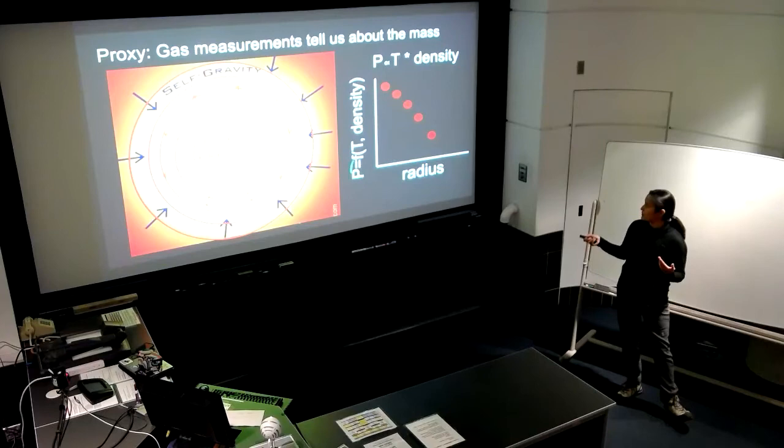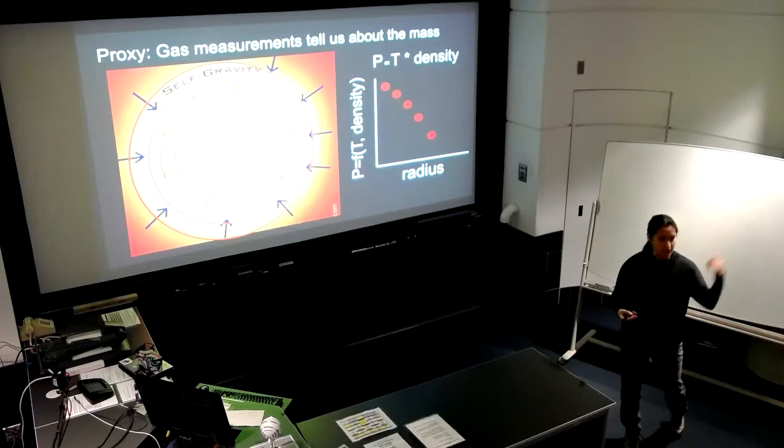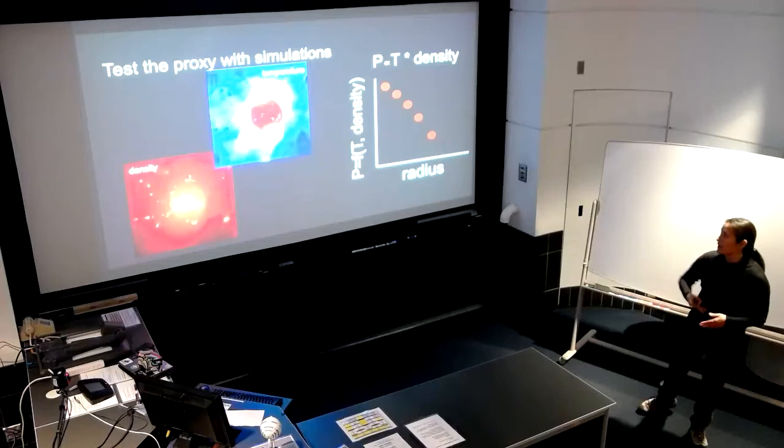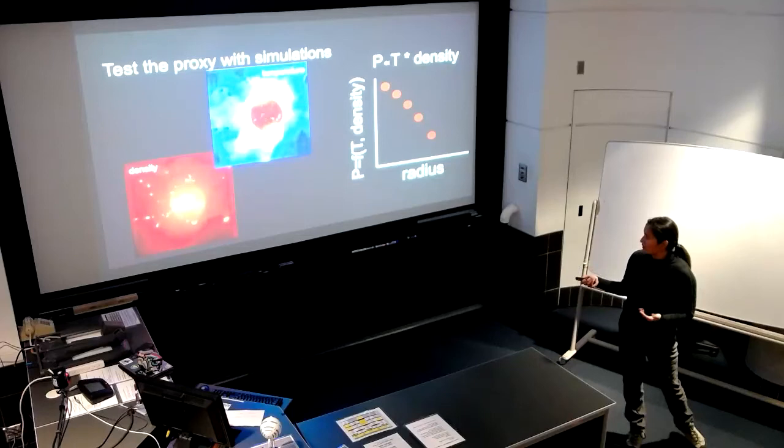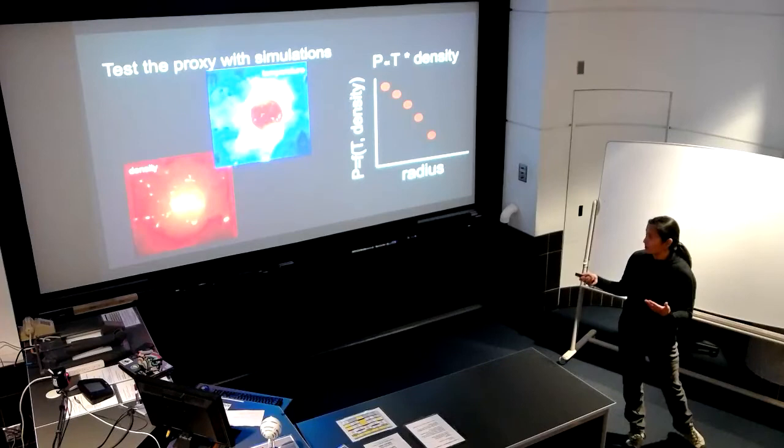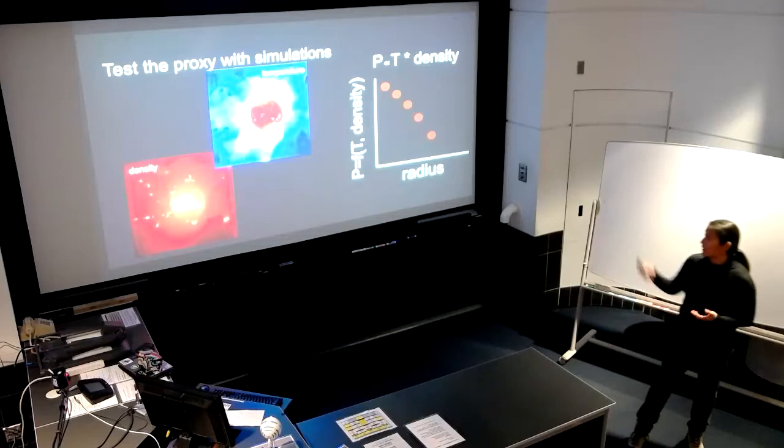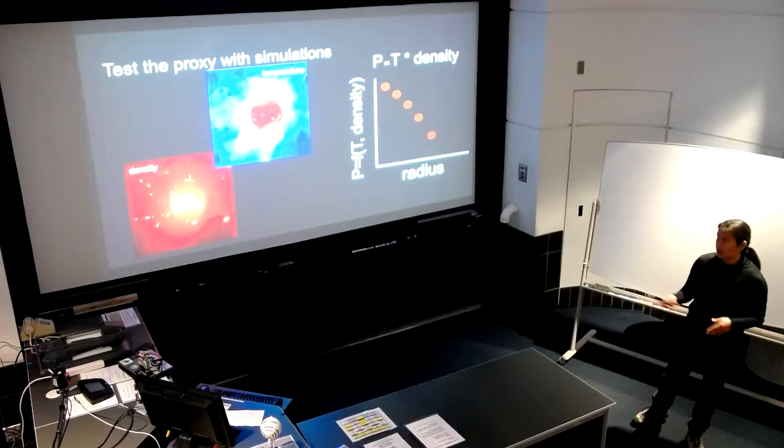From this, we can test that proxy with simulations. These are two examples of integrated line of sight density and temperature for a simulated galaxy cluster from which you can now generate mock X-ray observations and do an end-to-end comparison to get this on an apples-to-apples basis to compare with what observations might be measuring.